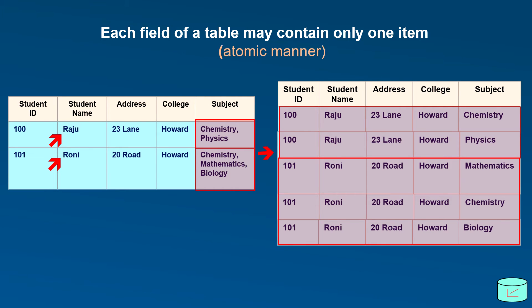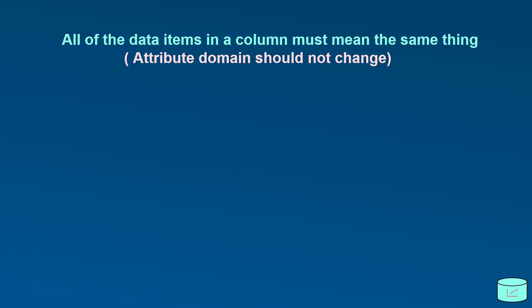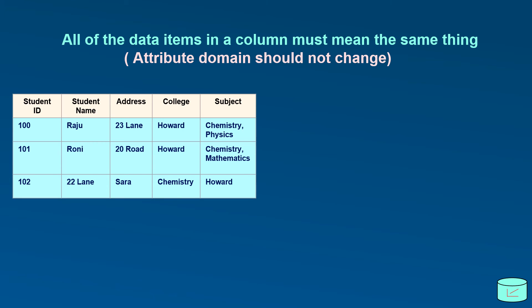Let's talk about the second condition. All of the data items in a column must mean the same thing. In other words, a column should not mix with different type of values. In this student table, student name column contain address, address column contains student name, college column contains subject and subject column containing college name. Because of the different type of values, these are not acceptable.